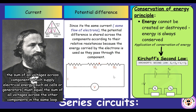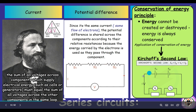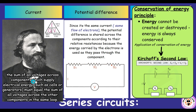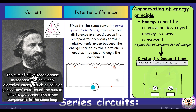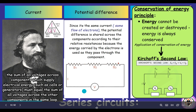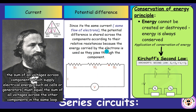This comes from the conservation of energy principle: energy cannot be created or destroyed, energy is always conserved. Kirchhoff's second law is an application of this. Since potential difference is defined as energy per coulomb of charge, the sum of all voltages across components which supply electrical energy must equal the sum of all voltages across components in the same loop — so the power supply's potential difference equals the sum of all other component potential differences.